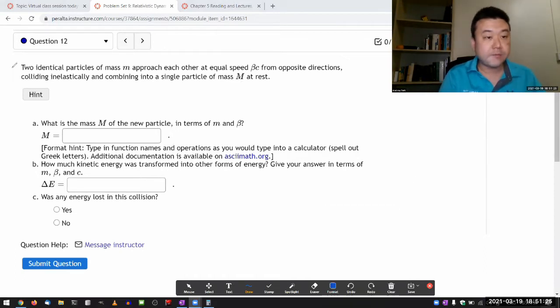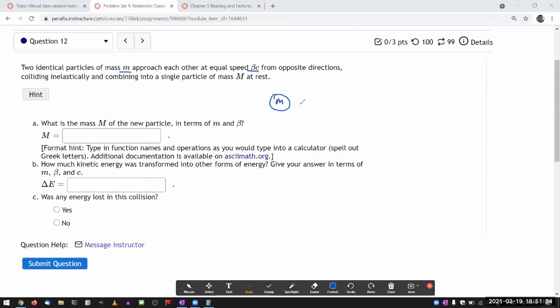It's describing two identical particles of some mass approaching each other at equal speed, which is nice. So I have a particle of mass m moving at speed beta c and another particle the same mass coming in head-on, and it says colliding inelastically and combining into a single particle.